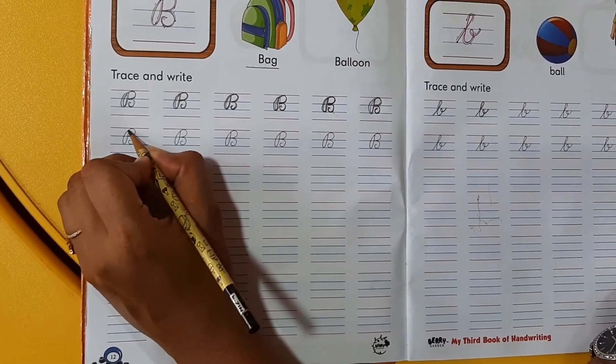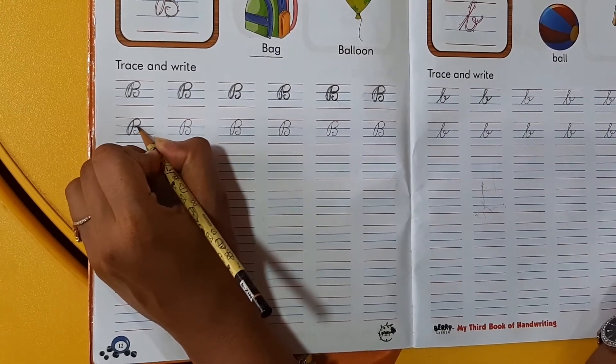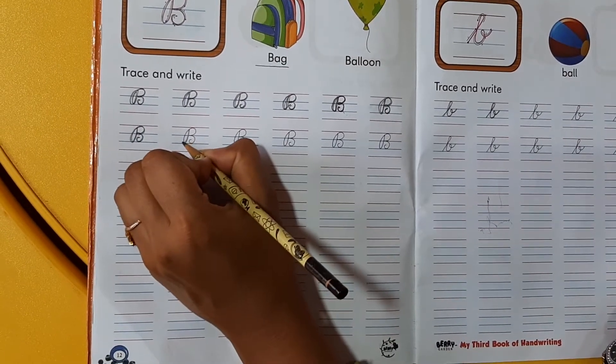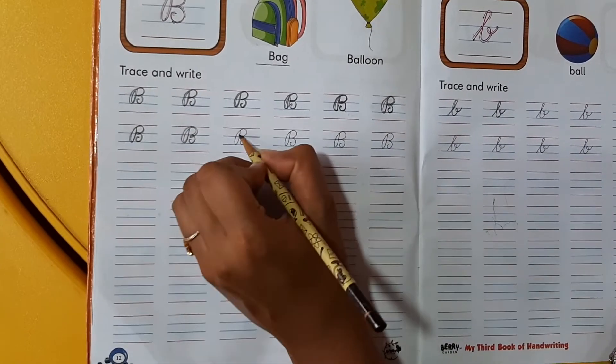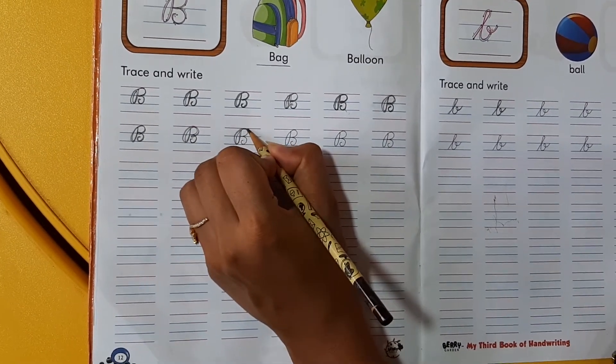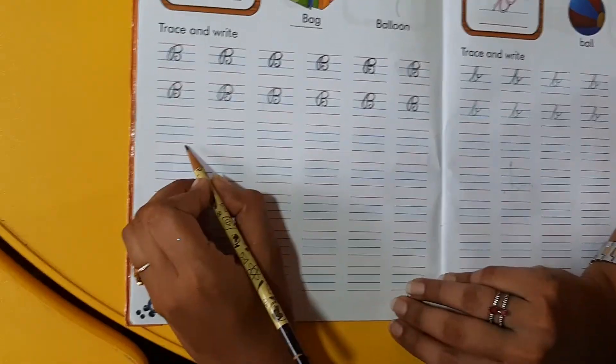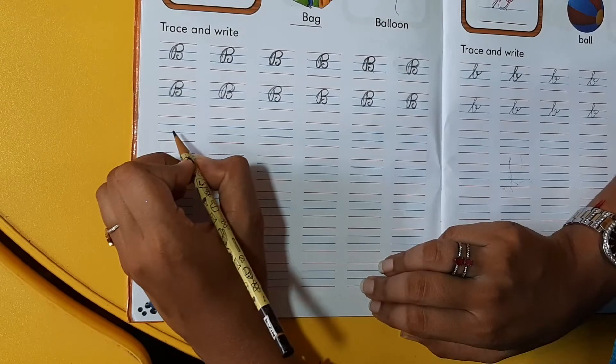Then, B for. Abhi meh po kwan bataenga B for? Yes. Who's gonna tell me? Kwan bataenga muje? Yes. B for boy. Yes. So are you all ready to write letter B? Yes. Come along with me.